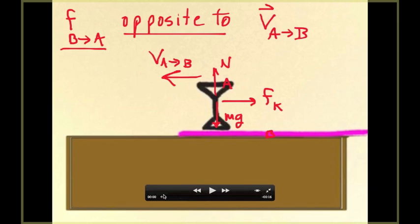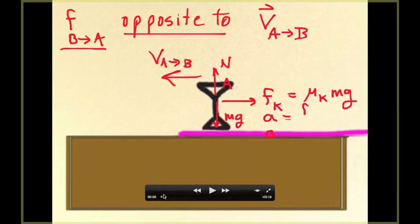The glass was at rest initially. When you start pulling on the tablecloth, the glass starts to move to the right for as long as the tablecloth is under the glass. This force of friction — kinetic friction — is the coefficient of kinetic friction times the normal force, which in this problem equals mass times g. So the acceleration of the glass while it is in contact with the tablecloth is equal to the net force divided by the mass, giving mu_k times g.